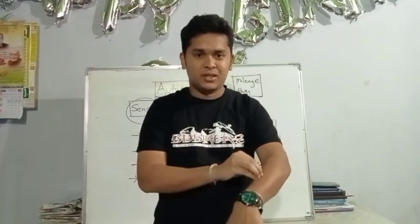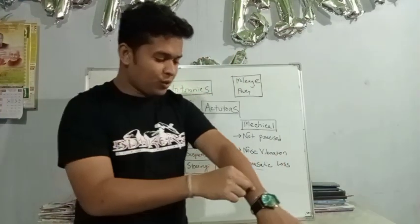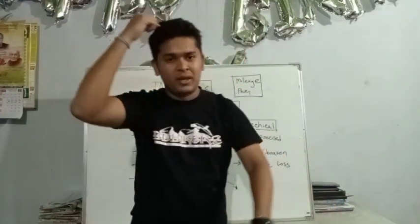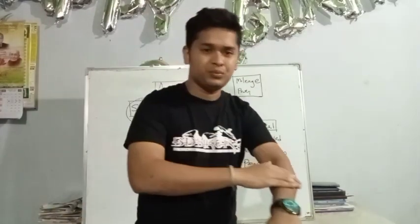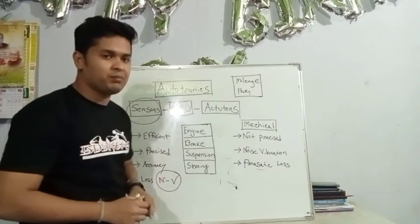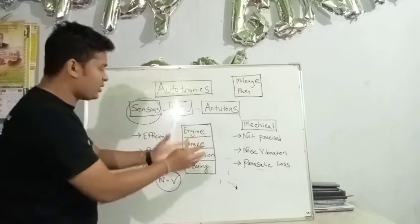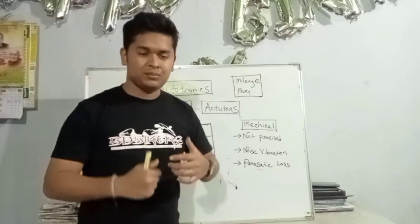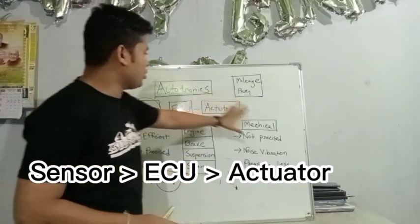For example, suddenly if I touch something hot, the signal is going from my skin to my brain, and then my brain is commanding my other hand to do this work. In the same way, the sensor in the engine measures various system parameters. The data goes to the ECU, which analyzes it numerically as per programming and then commands the actuator.